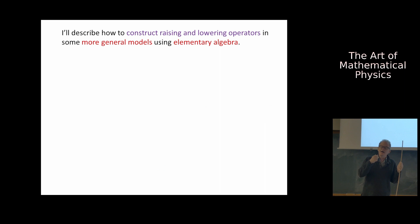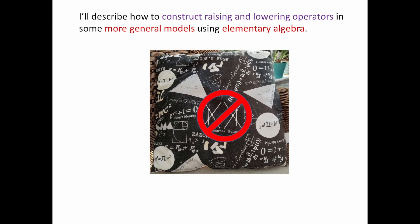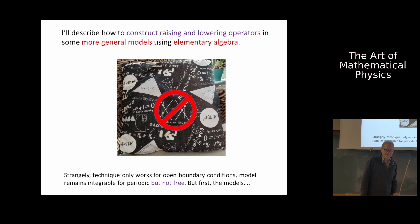I keep trying to emphasize this is an old story. Probably most of you have seen some version of it before. The topic of this talk is to say something new. I asked the question: is that all there is? And the answer is no. I'm going to tell you how that same procedure I outlined can be generalized to cases where it's not so obvious. I'll describe how to do this for more general models that are not bilinears of fermions using elementary algebra.